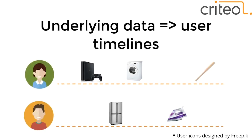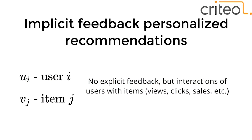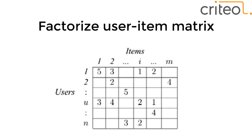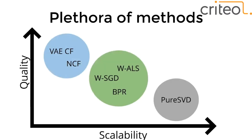One of the standard approaches to this kind of problem is implicit feedback, where we take user timelines and the products they viewed from the full vocabulary of products and transform them into a matrix defined by users and items, based on views, sales, or clicks. We end up with this familiar matrix. There are a plethora of methods ranging from simple SVD of this matrix to more complicated factorizations to more novel approaches like variational autoencoders and collaborative filtering.